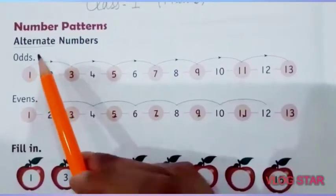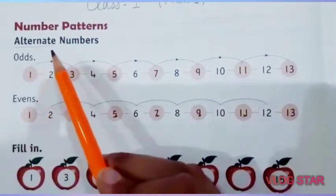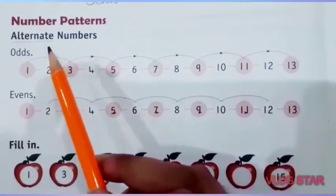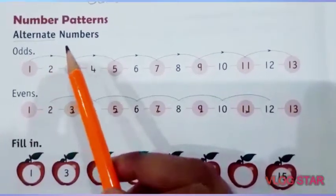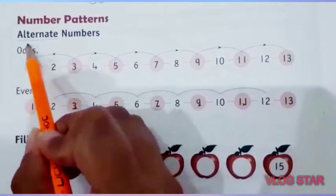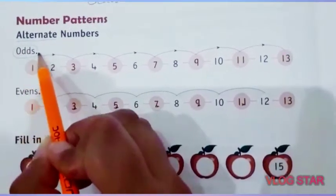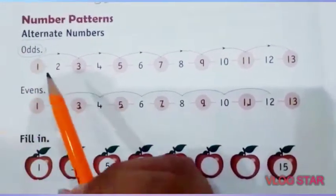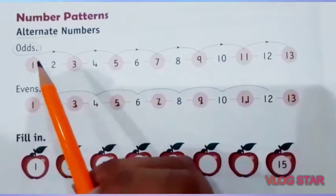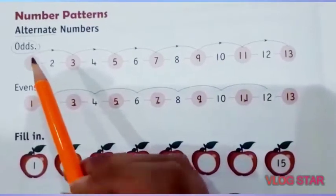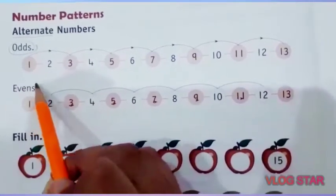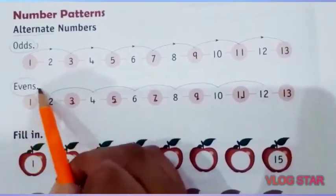Alternate meaning is one-one — we have to write numbers and leave one-one numbers. First is odds. What does odds mean? We have two types of numbers: one is odd numbers and one is even numbers.